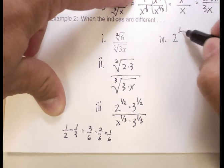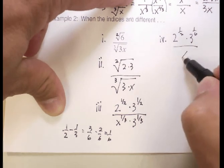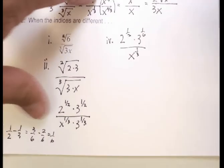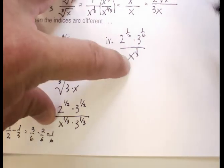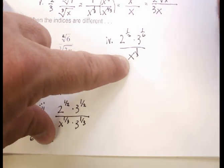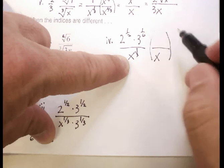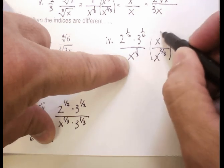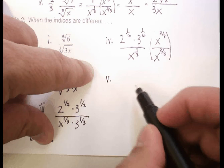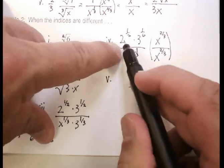In the fourth step I have 2 to the one-half times 3 to the one-sixth, all divided by x to the one-third. Now, when you have a fraction as your exponent in the denominator you effectively have a radical, so we need to multiply by something to eliminate it. Multiplying by x to the two-thirds works — in the denominator we get x to the one, and up top we get an additional factor of x to the two-thirds.